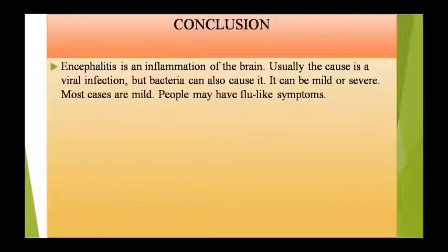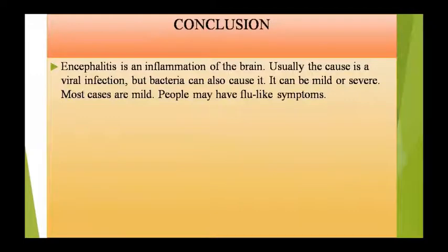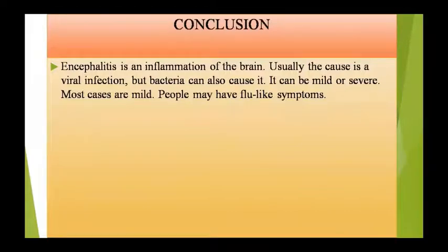Summary में — encephalitis brain का inflammation है, usually virus की वजह से होता है, पर bacteria और fungi से भी हो सकता है। यह mild से severe हो सकता है, पर अधिकतर cases mild होते हैं और flu-like symptoms जैसे लगते हैं। CNS में pathological changes में mononuclear cells infiltration — lymphocytes, plasma cells, macrophages — दिखाई देंगी। Cell lysis और phagocytosis of cell debris by macrophages होगा। Viral inclusion bodies जैसे Negri bodies, reactive hypertrophy और hyperplasia of astrocytes and microglial cells forming cell clusters, और vasogenic type का edema दिखाई देगा।